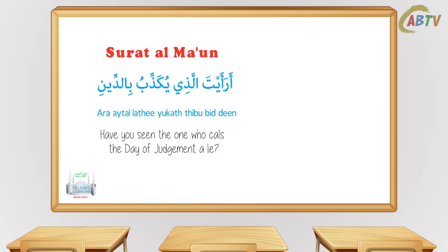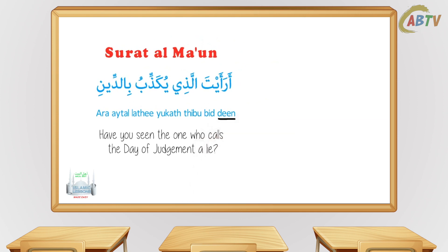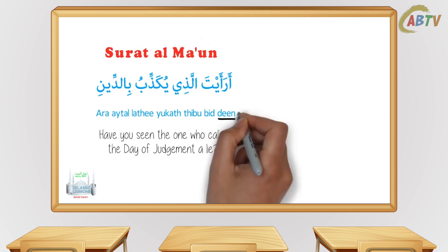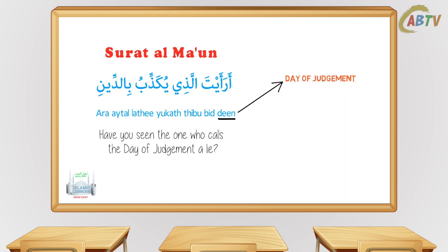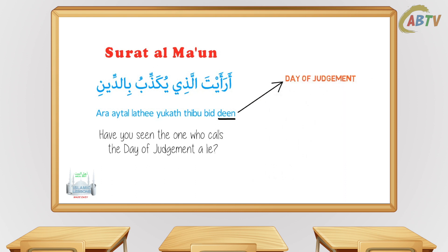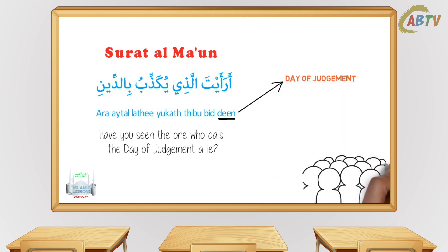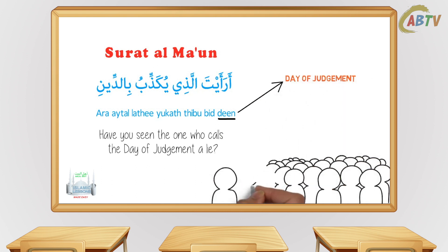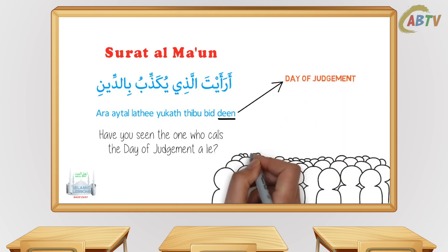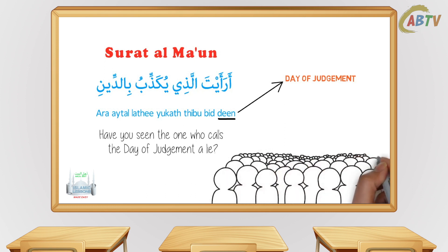The word 'Deyn' sometimes means religion, but in this ayah it means the Day of Judgment. The Day of Judgment is a day where all humans will be gathered together in front of Allah and all our actions and beliefs will be judged, rewarded or punished for.